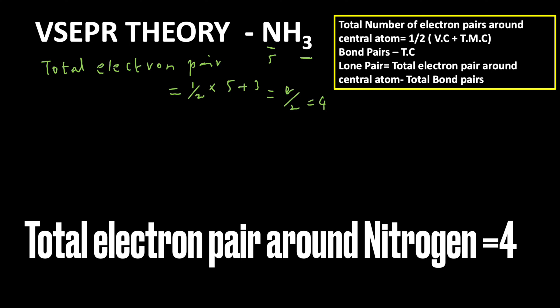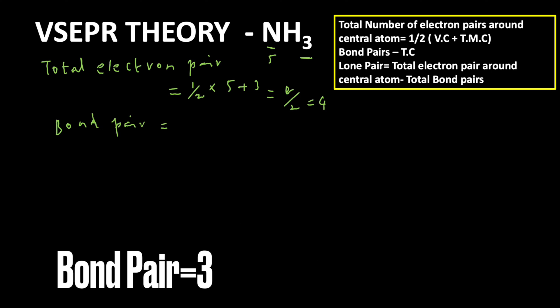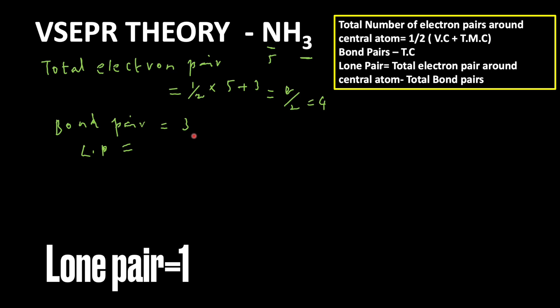Now we find the bond pair. Bond pair equals the total number of atoms attached to the central atom. In ammonia there are 3 hydrogen atoms, so bond pair equals 3. Therefore, lone pair equals total electron pairs minus total bond pairs: 4 minus 3 equals 1. So there is only one lone pair in the NH3 molecule.